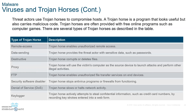Now, Trojan horses. A Trojan horse is a program that looks useful but carries malicious code. Write that down — know the difference between a virus and a Trojan horse. A Trojan horse can sit dormant for a long time until something triggers it. Types include: remote access — allows someone to break into your device remotely; data sending; destructive; proxy FTP — enables unauthorized file transfers; and security software disablers.